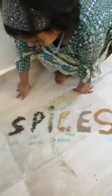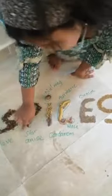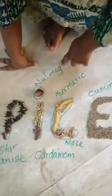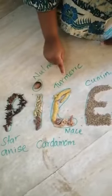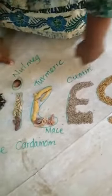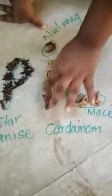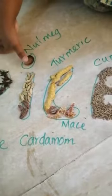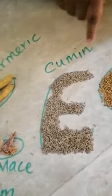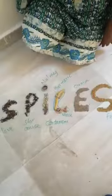First example: clove. Second example: star anise. Third example: nutmeg. Fourth example: turmeric. Cardamom — these are black and green cardamom. This is maize, and this is the covering of nutmeg. These are cumin seeds, and these are fenugreek seeds. These are examples of spices.